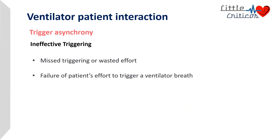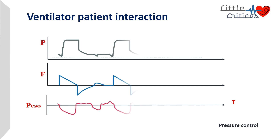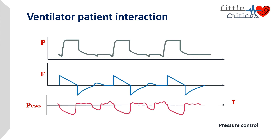Ineffective triggering, also called missed triggering or wasted effort, is one where there is failure of the patient's effort to trigger a ventilator breath. This is the most common type of asynchrony observed during ventilation. In pressure-controlled mode, there are episodes of increased flow or decrease in pressure that are not sufficient enough to trigger a breath, resulting in ineffective triggers. The esophageal pressure accompanying these ineffective triggers is lower compared to normal pressures.